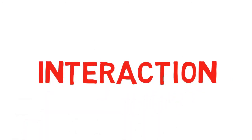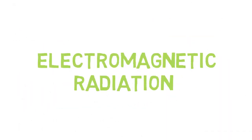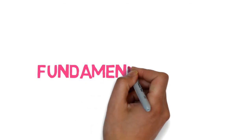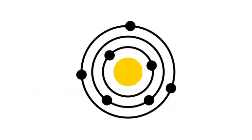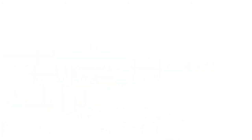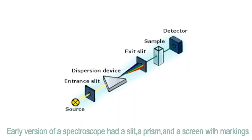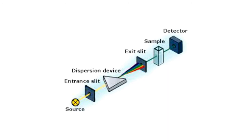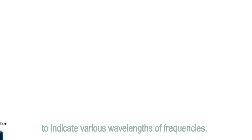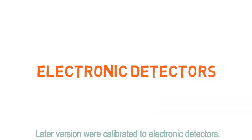Spectroscopy is the study of the interaction between matter and electromagnetic radiation, which is one of the fundamental tools scientists use to study the universe. A spectroscope is a device that measures the spectrum of light. Early versions had a slit, a prism, and a screen with markings to indicate various wavelengths or frequencies. Later versions were calibrated to electronic detectors.